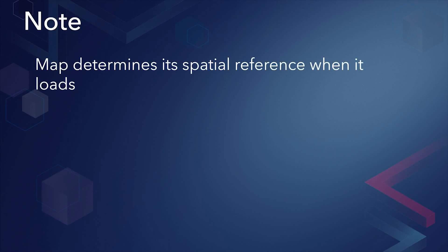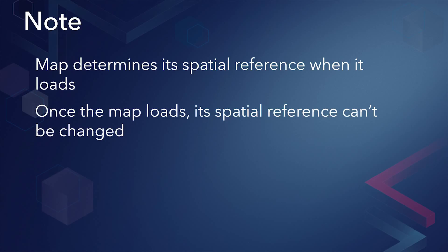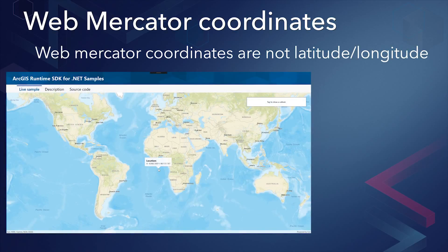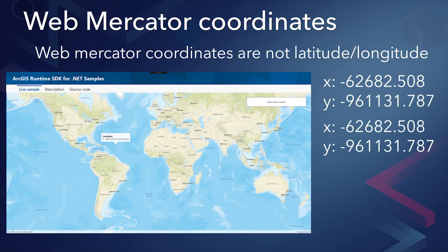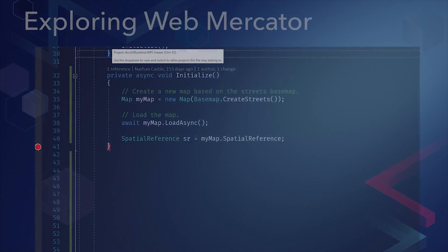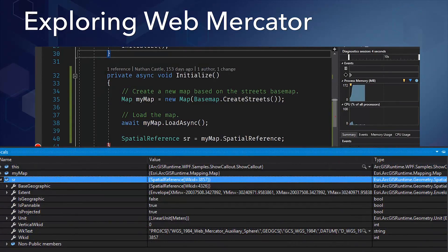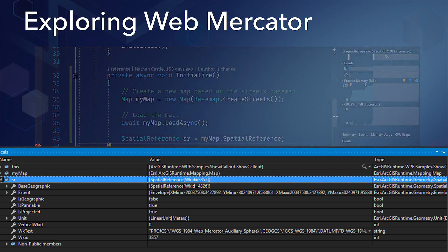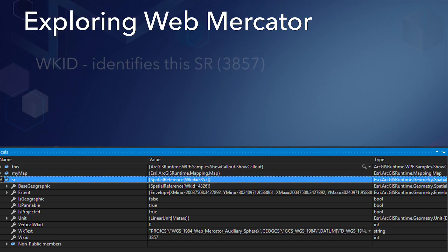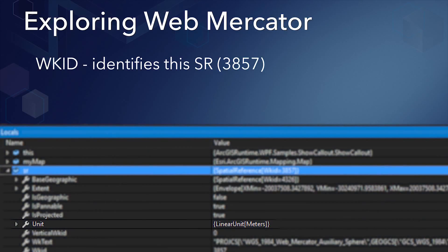Note that the map isn't initialized with its spatial reference until it is loaded. Once the spatial reference is set, you cannot change it. Let's take a look at some coordinates in the Web Mercator projected coordinate system. Note that these coordinates aren't familiar if you're only used to seeing latitude-longitude coordinates. Let's open up the debugger to get some more information about the spatial reference. The well-known ID is a unique identifier for this spatial reference — in this case, it is 3857. You can create spatial references directly from well-known IDs. See the documentation for a list of supported spatial references and their IDs. Web Mercator uses meters as its unit, so anytime you use ArcGIS Runtime geometry methods to work with geometries in this spatial reference, results will be in meters.